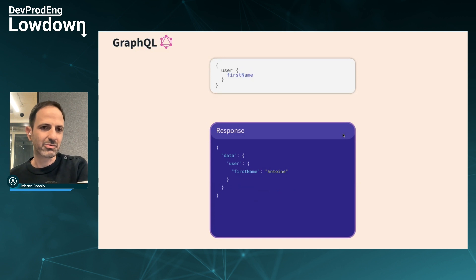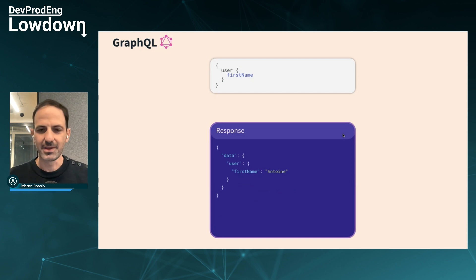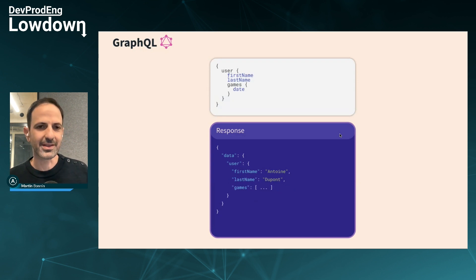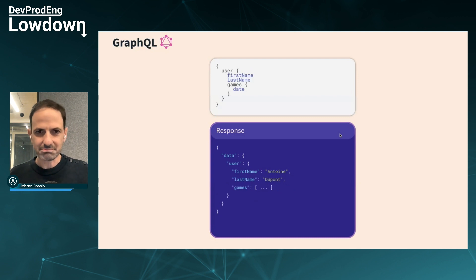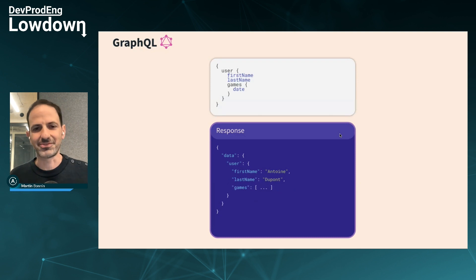GraphQL is more of a discussion between a client and a server. You write something that resembles JSON — it's not exactly JSON because it's GraphQL — but if you just want the first name, you just ask for the first name and get back the first name. If you also want the last name, you ask for the last name. If you want all the games, you just ask for them. You ask the backend exactly what you want. The nice thing is you don't have to remember a lot of different URLs, and you know in advance what data will be returned.